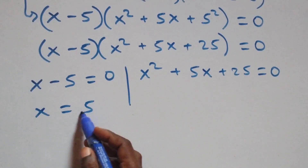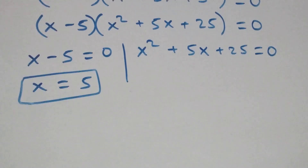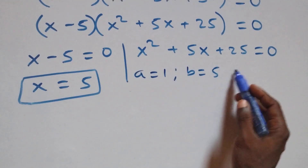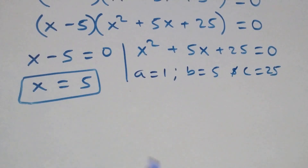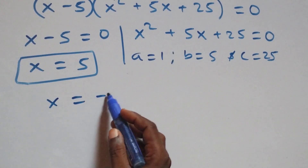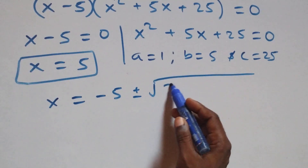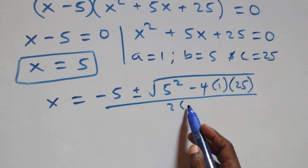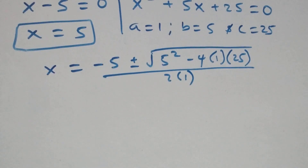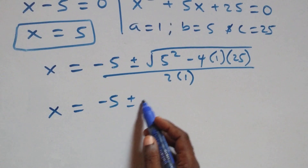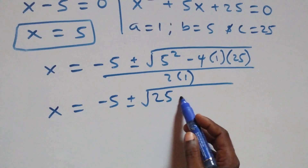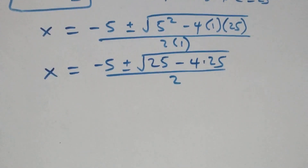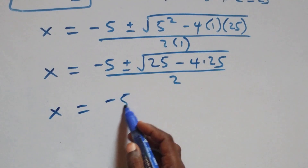Solving the first sub-case gives x equals to 5, which is also a solution. For the quadratic x squared plus 5x plus 25 equals 0, we have a equals 1, b equals 5, c equals 25. Applying the quadratic formula: x equals minus 5 plus or minus square root of 5 squared minus 4 times 1 times 25, all over 2 times 1.